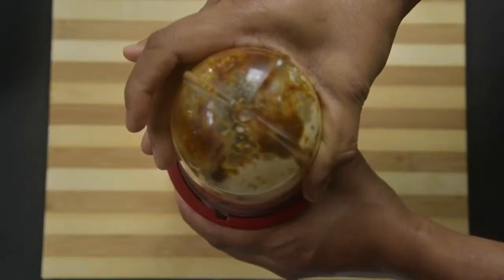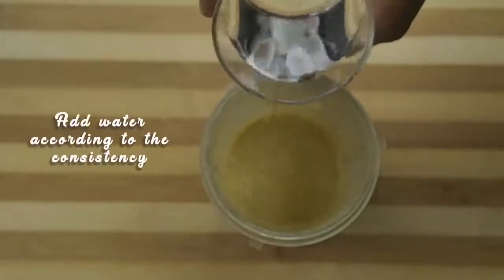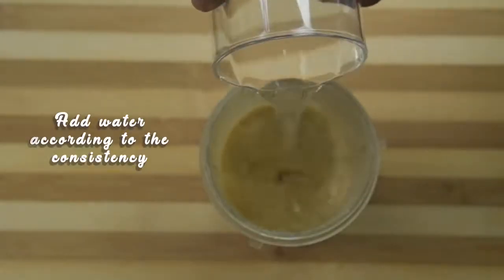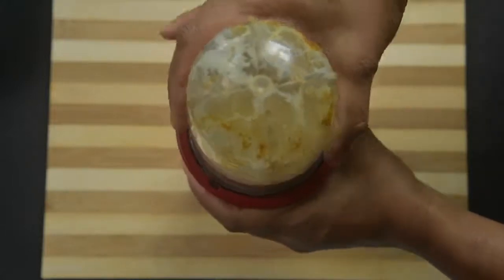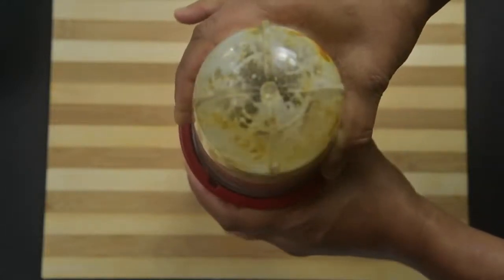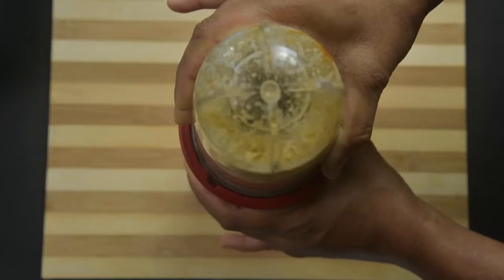Then switch off and add water according to the consistency of the curds. If the curds is too thick, add more water; if it is watery, add less water. Never add water during first blending, as the curds and oil don't mix well.